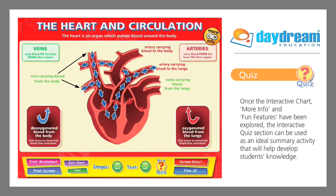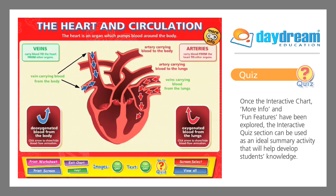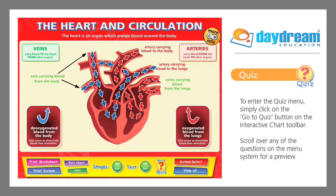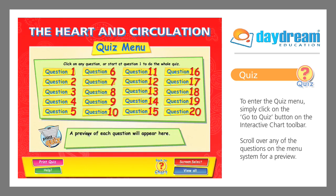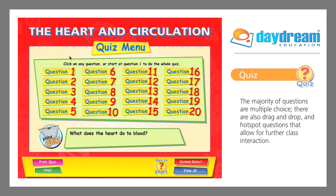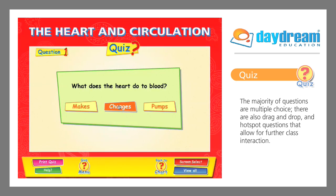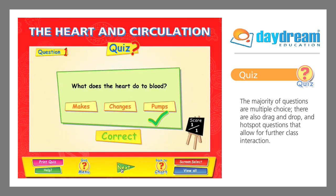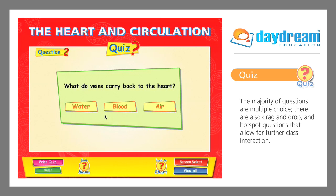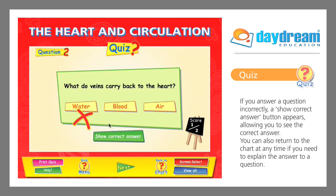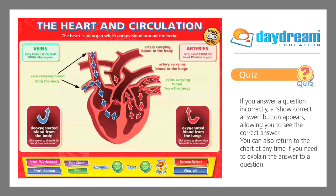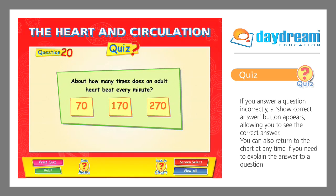Once the interactive chart, More Info and Fun Features have been explored, the interactive quiz section can be used as an ideal summary activity that will help develop students' knowledge. To enter the quiz menu, simply click on the Go to Quiz button on the interactive chart toolbar. Scroll over any of the questions on the menu system for a preview. The majority of questions are multiple choice. There are also drag and drop and hotspot questions that allow for further class interaction. If you answer a question incorrectly, a Show Correct Answer button appears, allowing you to see the correct answer. You can also return to the chart at any time if you need to explain the answer to a question.